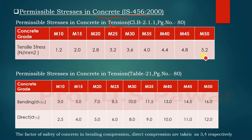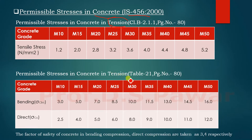In tension, for M10 the stress is 1.2, for M15 it is 2, and up to M55 the tensile stress is 5.2. Similarly, IS 456 has given the permissible stresses in concrete in compression, specifically in bending, as per Table 21, page 80.